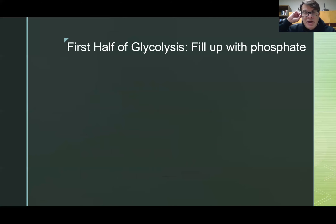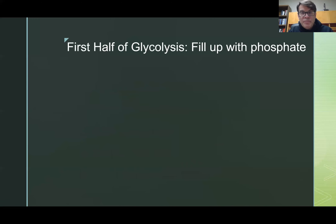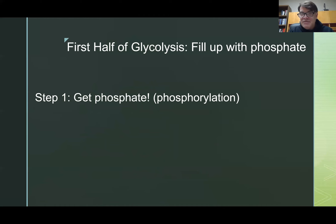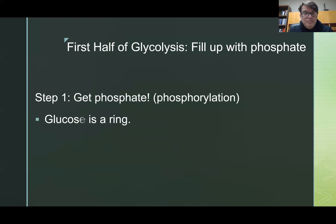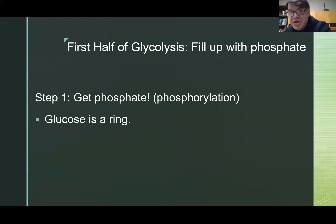Now let's do this in slow motion — the first half of glycolysis. Step one: add phosphate. We call the adding of phosphate phosphorylation. I never knew phosphate was so important — I thought it was just something you use with your laundry. But anyway, glucose is a ring structure. Almost all of these steps involve enzymes. Let me remind you what an enzyme is.